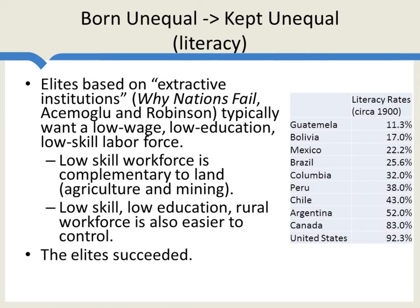Societies which were born unequal were kept unequal. Let's look at literacy. These elites, based upon extractive institutions — a term from Acemoglu and Robinson's book 'Why Nations Fail' — typically want a low-wage, low-education, low-skill labor force. They are willing to work to keep the labor force that way, because a low-skilled labor force is complementary to land, to agriculture, and to simple mining production. So the more low-skilled labor, the more the landowners would benefit. The landowners wanted to keep the population low-skilled and low-education.